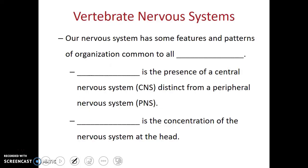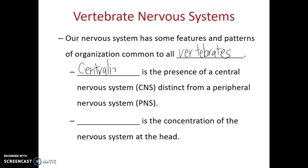Our nervous system has some features and patterns of organization common to all vertebrates. First, the concept of centralization, which is the presence of a central nervous system distinct from the peripheral nervous system. And then also cephalization, which is the concentration of the nervous system at the head.